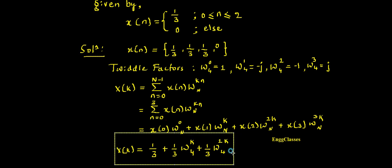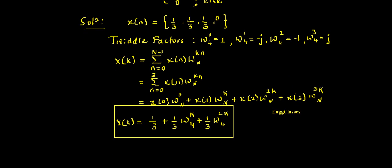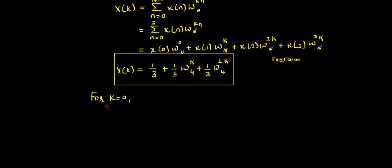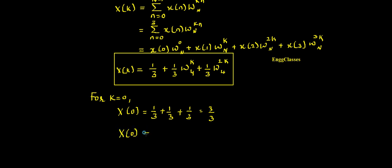Once I have this expression the next thing is quite easy — I just vary k. For k=0: X(0) = 1/3 + (1/3)·W4^0 + (1/3)·W4^0 = 1/3 + 1/3 + 1/3 = 3/3 = 1. Therefore X(0) equals 1. This is the first DFT coefficient.